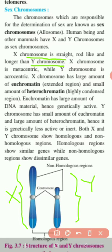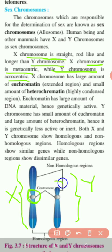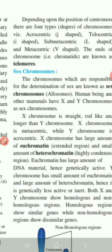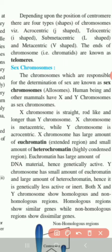X chromosome is metacentric, meaning the centromere is present at the center of the chromosome, while Y chromosome is acrocentric — the centromere is near one arm or one side. In acrocentric chromosomes the shape is J-shaped, while metacentric chromosomes are V-shaped.